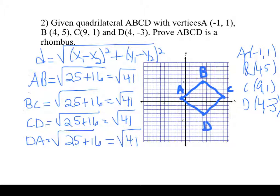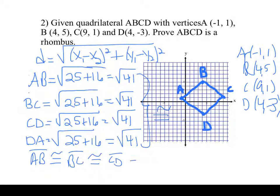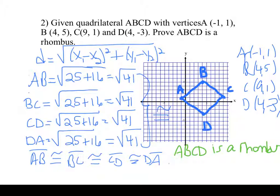Now I need to make a conclusion. I can say they're all congruent — or state that segment AB is congruent to segment BC, which is congruent to CD, which is congruent to DA. Now we're ready for the final conclusion: ABCD is a rhombus because it has four congruent sides. Rhombus is one of the easiest things to prove. Distance, four times.